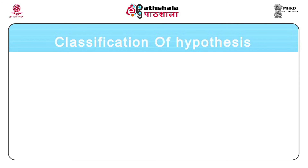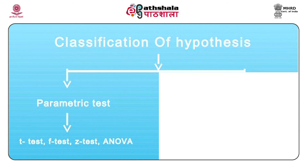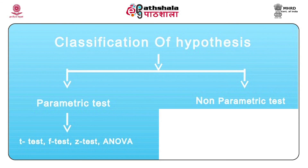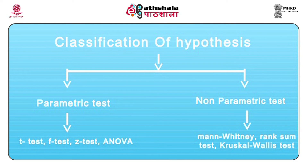Generally speaking, when we try to classify a hypothesis — the testable proposition based upon which we draw a generalized conclusion about whether a hypothesis is null or alternative — we can use two different types of tests. The parametric tests involve the t-test, z-test, and analysis of variance. The non-parametric tests in this case would be Mann-Whitney, runs test, and Kruskal-Wallis.